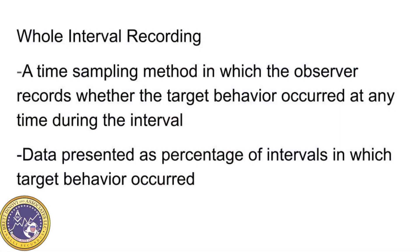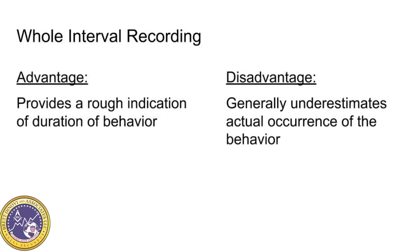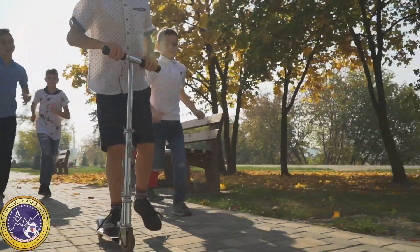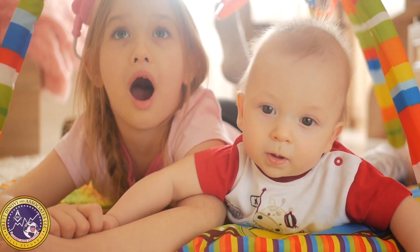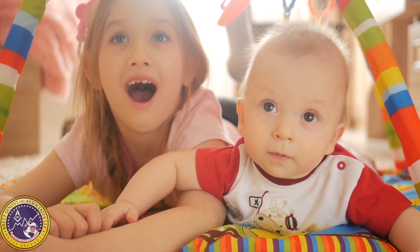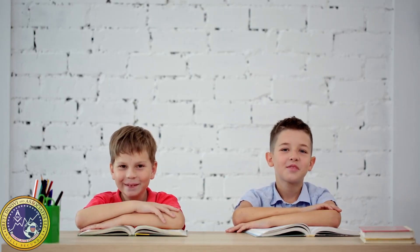Whole interval recording is a time sampling method in which the observer records whether the target behavior occurred throughout the entire interval. Data are presented as a percentage of intervals in which target behaviors occurred. An advantage is that it provides a rough indication of duration of behavior. A disadvantage is that it generally underestimates occurrence of behavior. It can be overly sensitive to reductions in high-rate behavior and insensitive to increases in low-rate behaviors. It may be more appropriate to use whole interval recording for behaviors targeted for increase, but it would require significant behavior change in order to show an increase. Using the previous example, a student would need to go from remaining seated for one second to ten seconds for one interval to be scored.